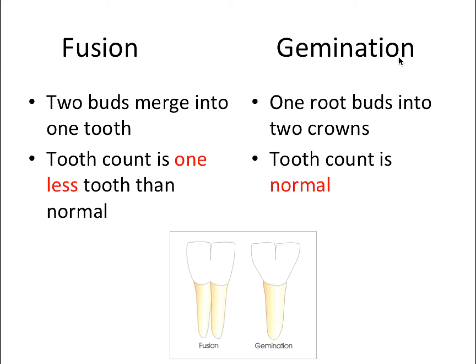On the flip side, gemination is where one tooth bud splits into two crowns — one root with a crown being divided into two halves. For gemination, the tooth count is normal because we count that one multi-faceted crown as one tooth with one root. It just looks a lot bigger than usual, which can cause aesthetic complications especially in the anterior. A helpful mnemonic: Gemini is a zodiac sign symbolized by twins, so think 'twinning' — which is actually another name for the condition.